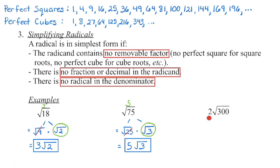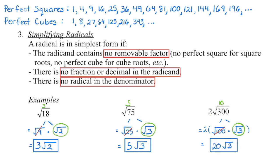In our third example, this is a mixed radical but it's not simplified because there is a perfect square I can divide out of that 300 — a removable factor. I can see that 100 will divide evenly into 300: 300 divided by 100 is 3, and we still have that 2 out front. I take the square root of 100, which is 10. There's no more perfect square other than 1 that will divide evenly into 3. So I go 10 times 2 out front, which gives me 20, and then that square root of 3 remains in the radicand.